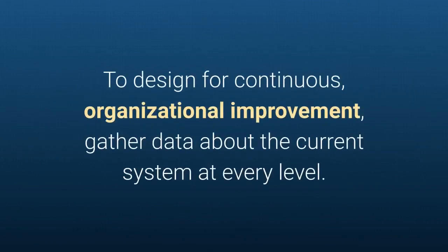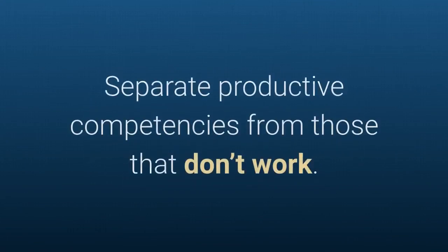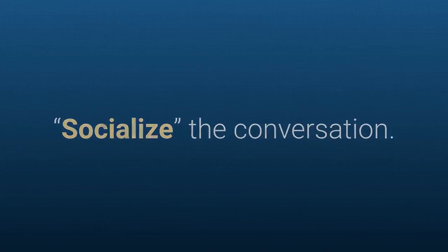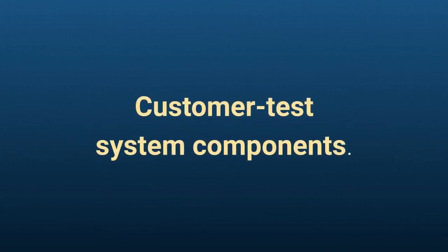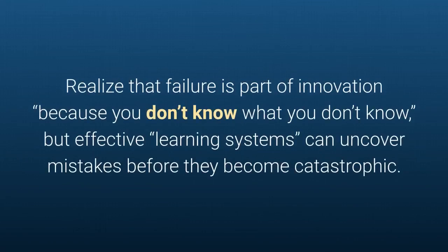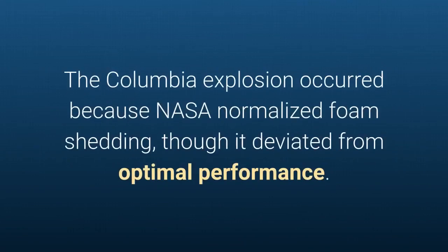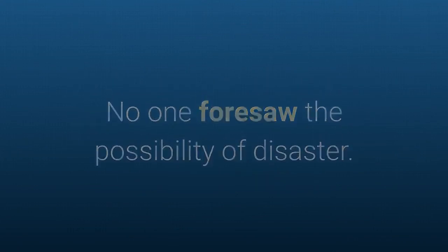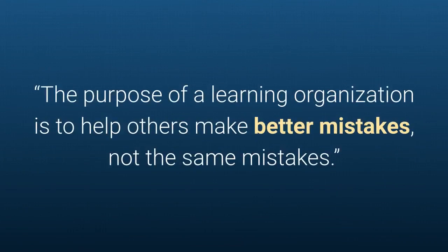To design for continuous organizational improvement, gather data about the current system at every level. Separate productive competencies from those that don't work, socialize the conversation, customer-test system components, and challenge complacency. Realize that failure is part of innovation — effective learning systems can uncover mistakes before they become catastrophic. The Columbia explosion occurred because NASA normalized foam shedding though it deviated from optimal performance, and no one foresaw the possibility of disaster.